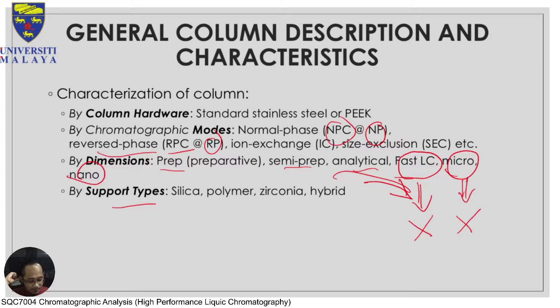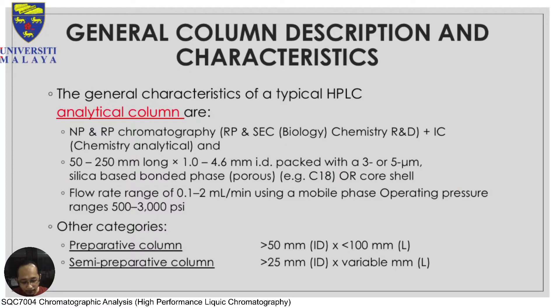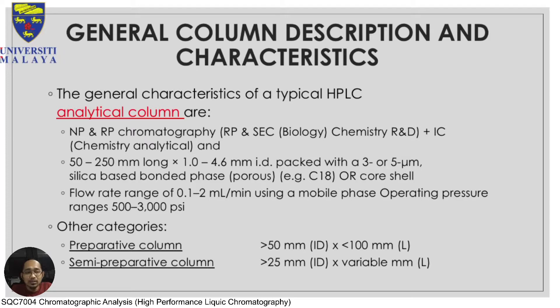For the coming slides we will look at all four column characteristics in a bit more detail. Starting with general characteristics of a typical analytical column — analytical column is the most widely used column, especially in industry. Industry uses HPLC to do analytical chemistry, such as QA and QC — quality assurance and quality control — of a material.